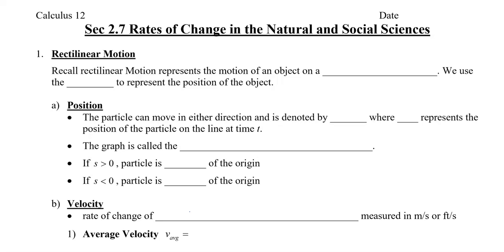In this video, we're going to take a look at how rectilinear motion is used to analyze some problems. Rectilinear motion represents the motion of an object on a coordinate line. We're going to use the s-axis to represent the position of the object. So we're going to take a look at position, velocity, and acceleration. Starting with position, the particle can move in either direction, and it's denoted by s of t, where s represents the position of the particle on the line at time t. The graph is called the position versus time graph.